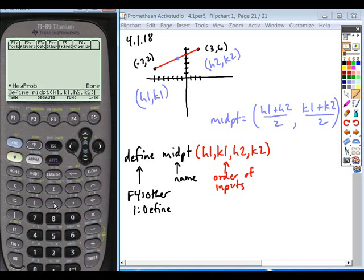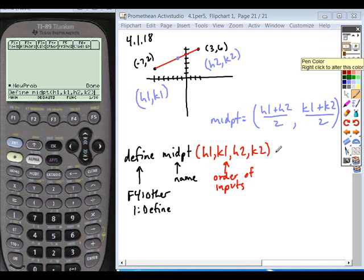All right, so now I've told my calculator I'm creating a function. I've given it a name. I've determined the order of the inputs. The last thing we need to do is tell it the calculation that's going to be performed. So we have equals.